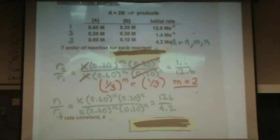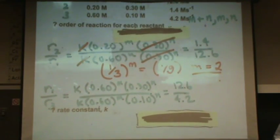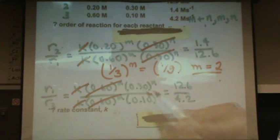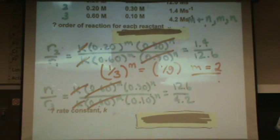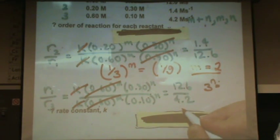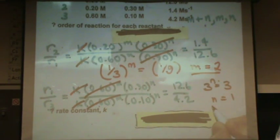Notice a lot of stuff cancels. The Ks cancel and the m parts cancel. So 0.3 over 0.1, that sounds like three to me. Three to the n power from here equals 12.6 over 4.2, that sounds like three also. So what's n? Just one. Yep.